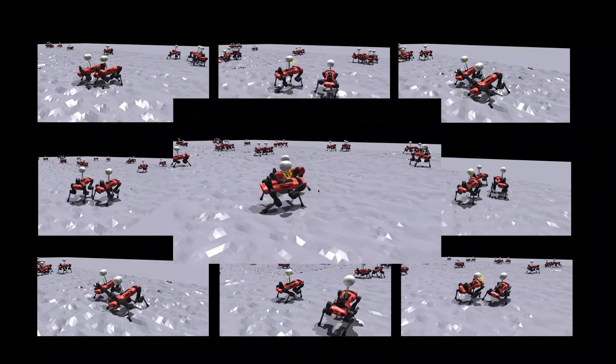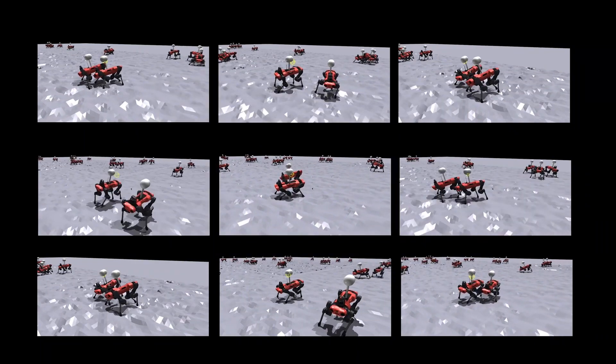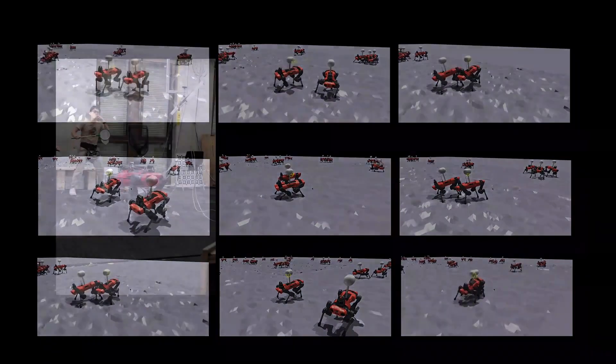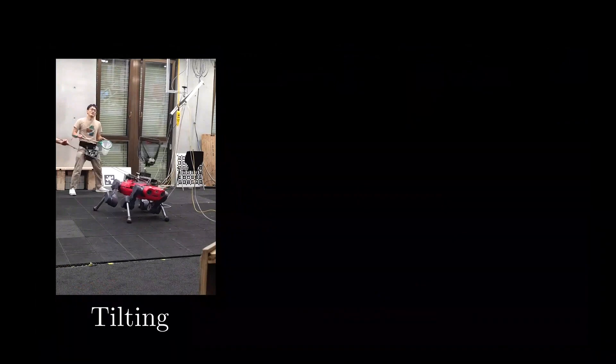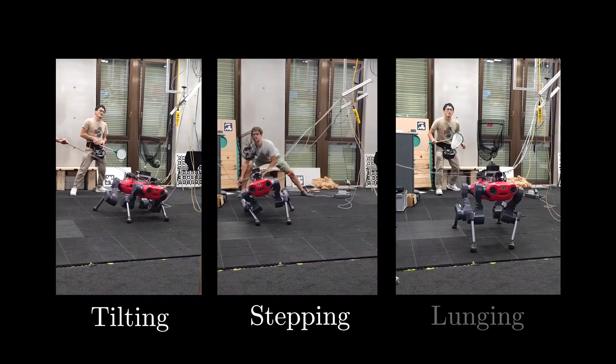After 15 minutes of training on a single GPU, our policy transfers seamlessly to the real world and executes agile tilting, stepping or even lunging to the side when needed.